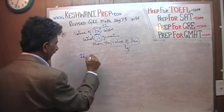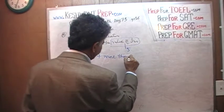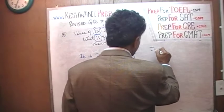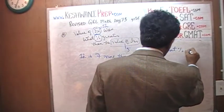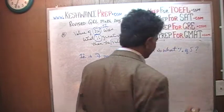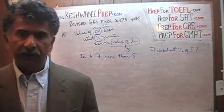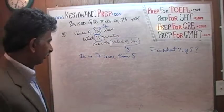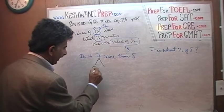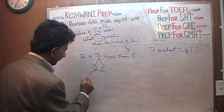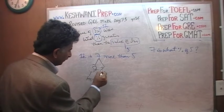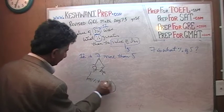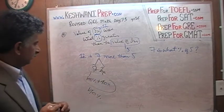Before we worry about the percentage, let's first figure out how much bigger: 12 is 7 more than 5. So the question is: 7 is what percent of 5? The quick and dirty way — 7 is made up of 5 and a 2. Five represents 100%, and 2 out of 5 is about 40%, so the answer is 140%.